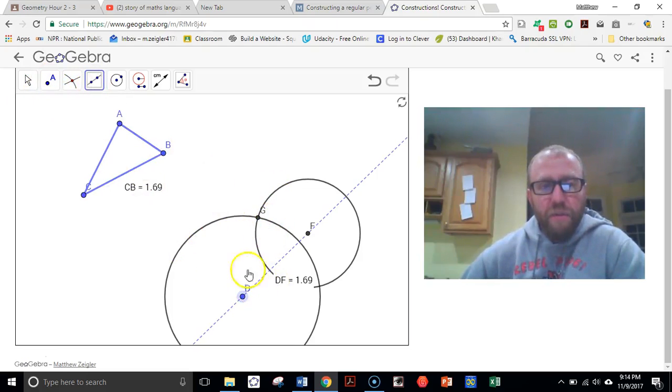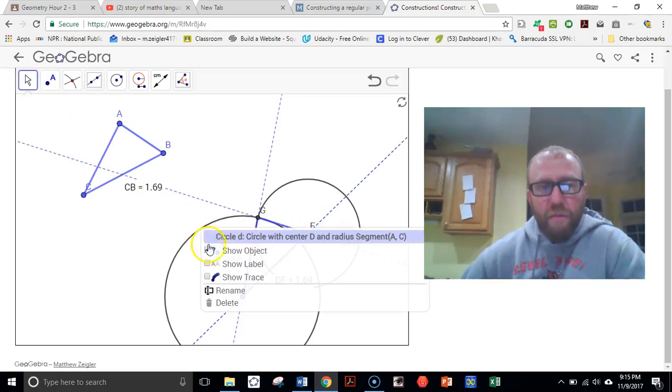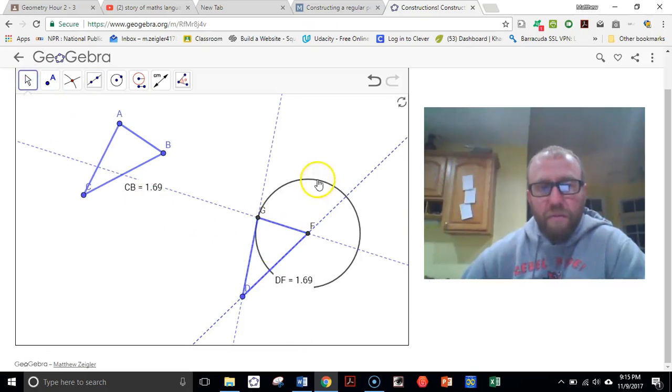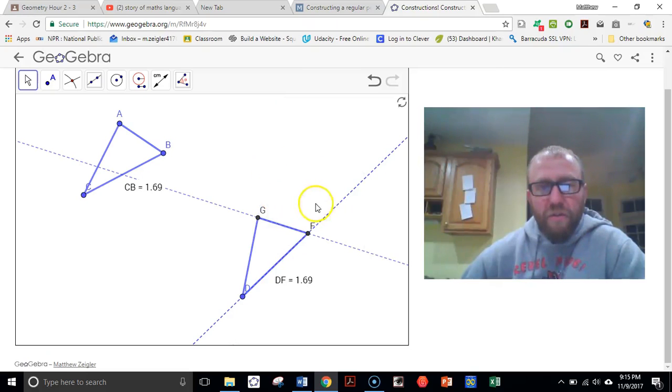Now we just have to draw on our segments. There we go. Down here. And there. I'm going to do some hiding. Let's get rid of this circle. We don't need the circles anymore. And we'll go ahead and get rid of these extra lines. We're just going to hide all those. I missed one.